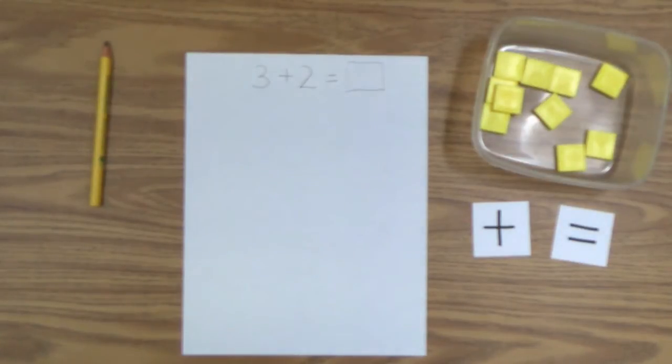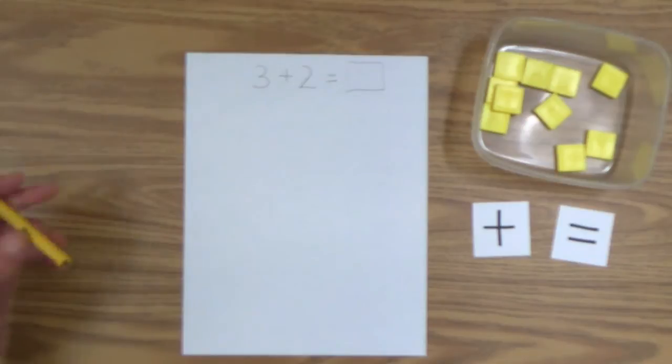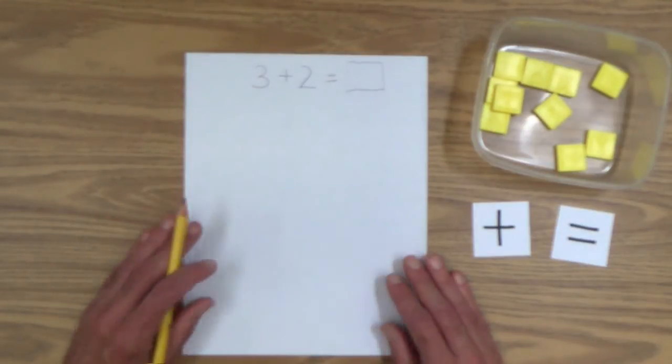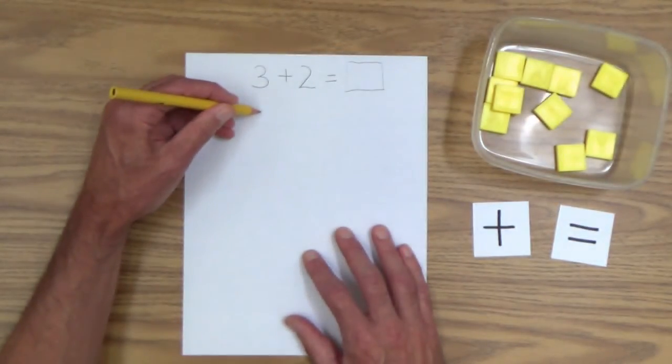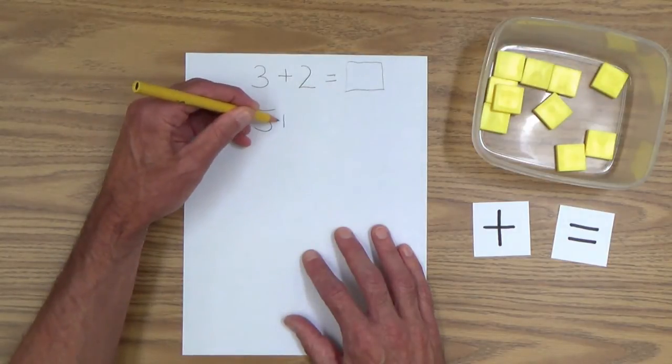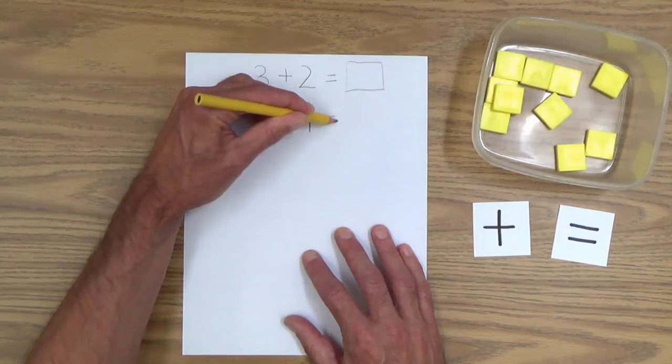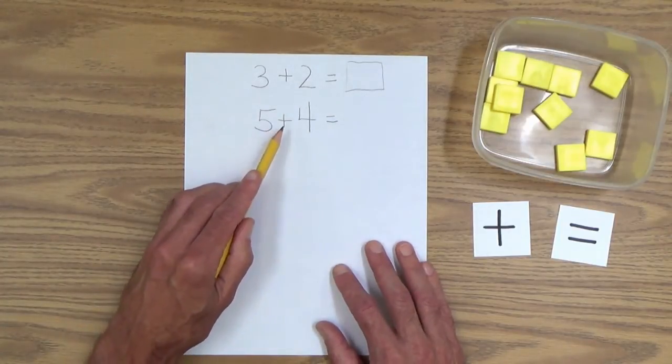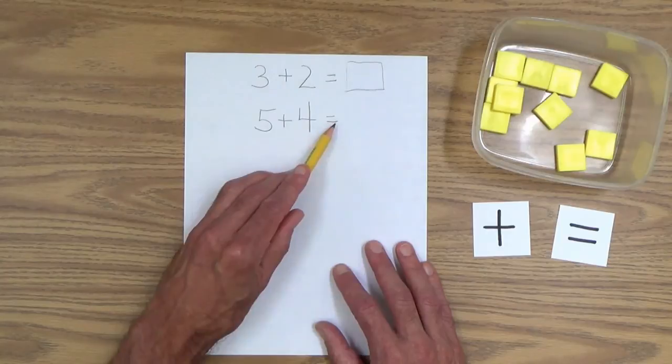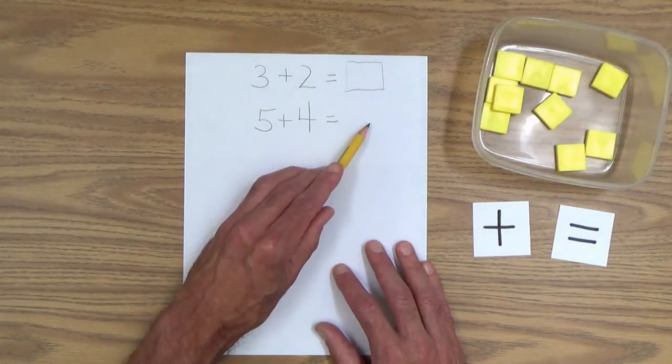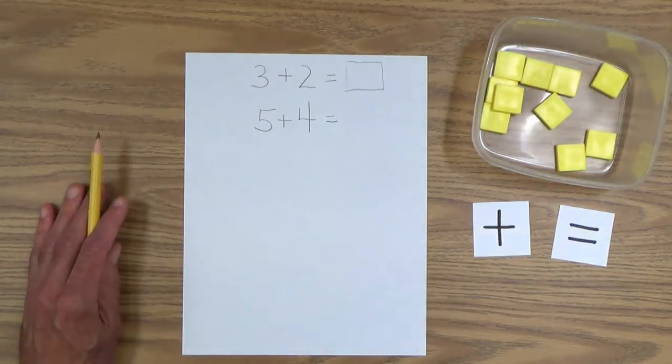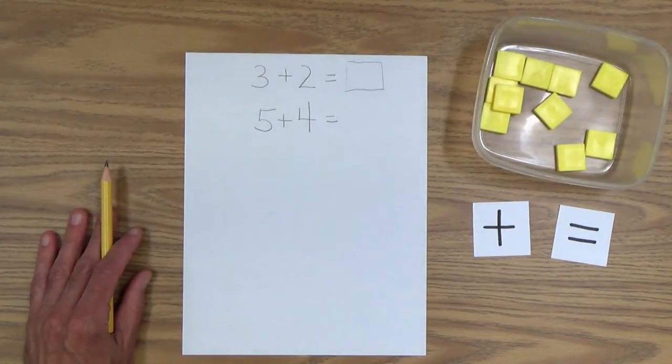There's lots of new vocabulary here. Equals, plus, total, altogether. So, you want to emphasize those points. And that number story I just said to you would look like this. Five plus four equals how many? So, that's what I call the concept of number stories.